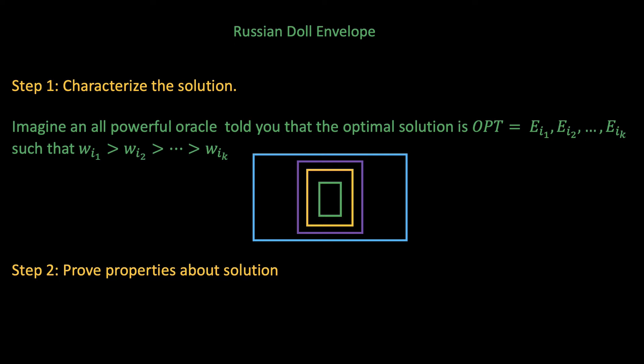What do we know about opt? Well, we know that ei2 fits inside ei1, and this happens if and only if wi1 is greater than wi2 and hi1 is greater than hi2. We can apply this inductively, which would imply that the widths are in descending order and the heights are also in descending order in any optimal solution.